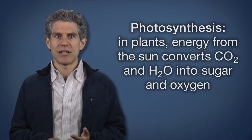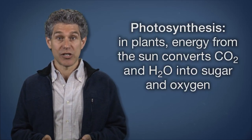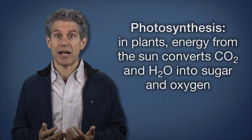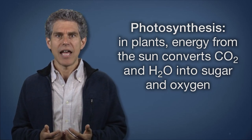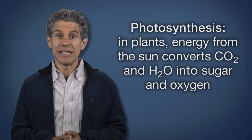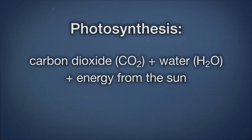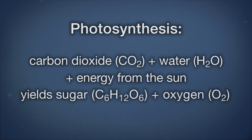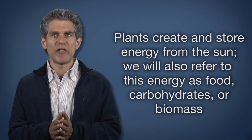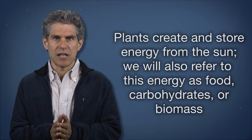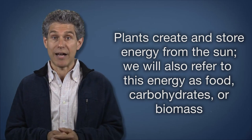Photosynthesis: energy from the sun is used by primary producers, such as green plants, to take in carbon dioxide and water from the atmosphere and incorporate carbon into their tissue. The reaction is CO2 + H2O + energy from the sun → C6H12O6 + O2. C6H12O6 is the simple carbohydrate glucose, also called sugar. We will refer to this stored energy from the sun as carbohydrates, or sometimes biomass.